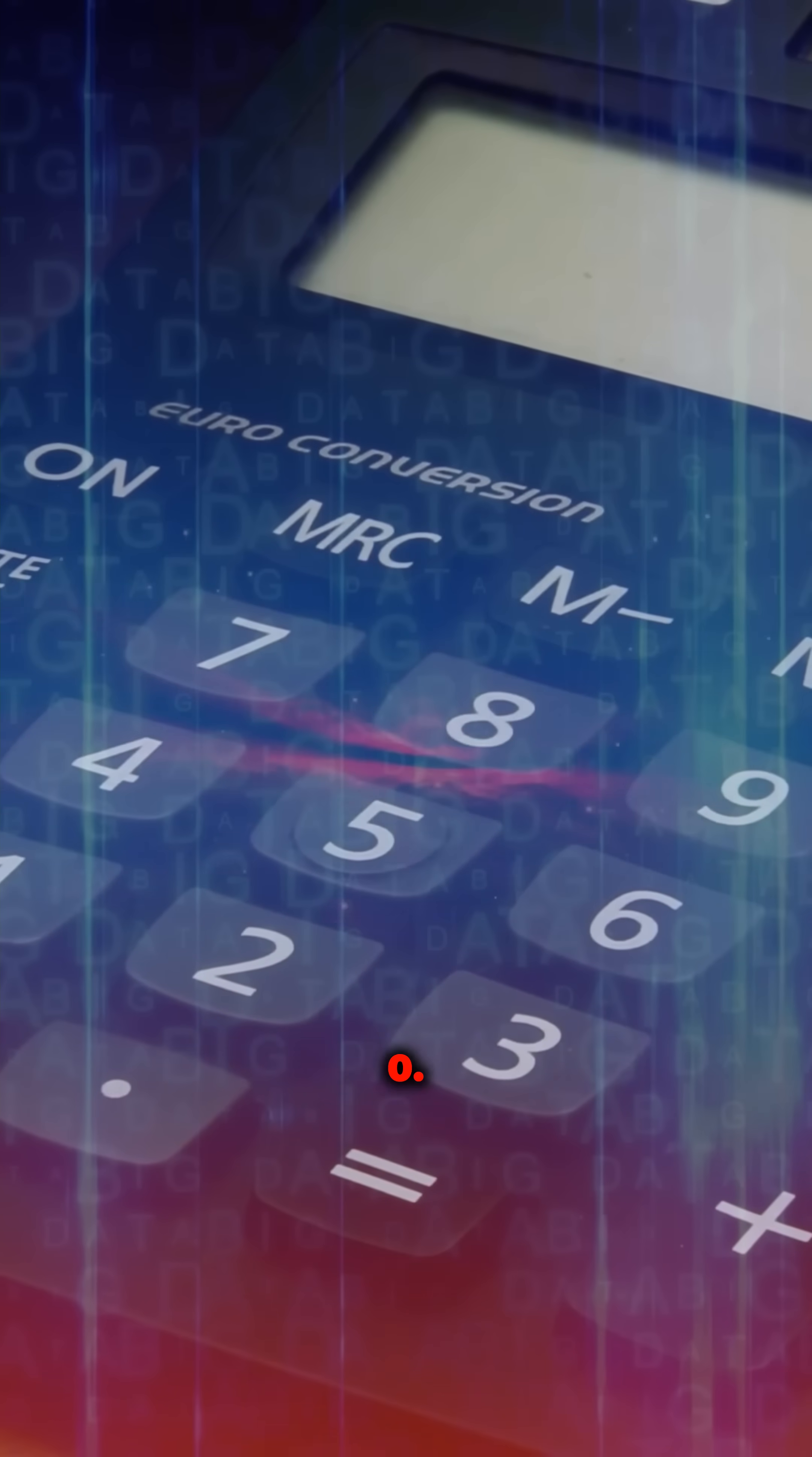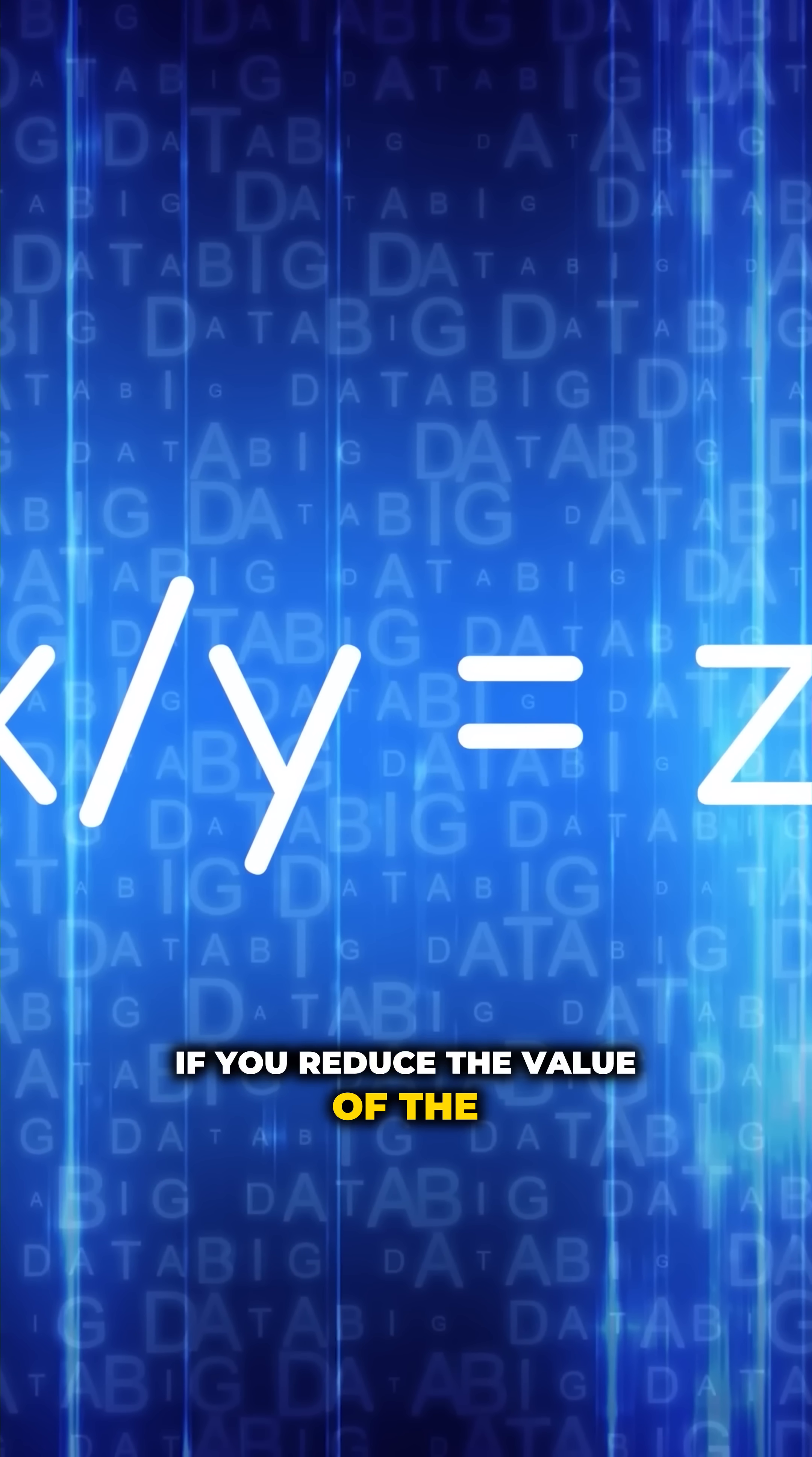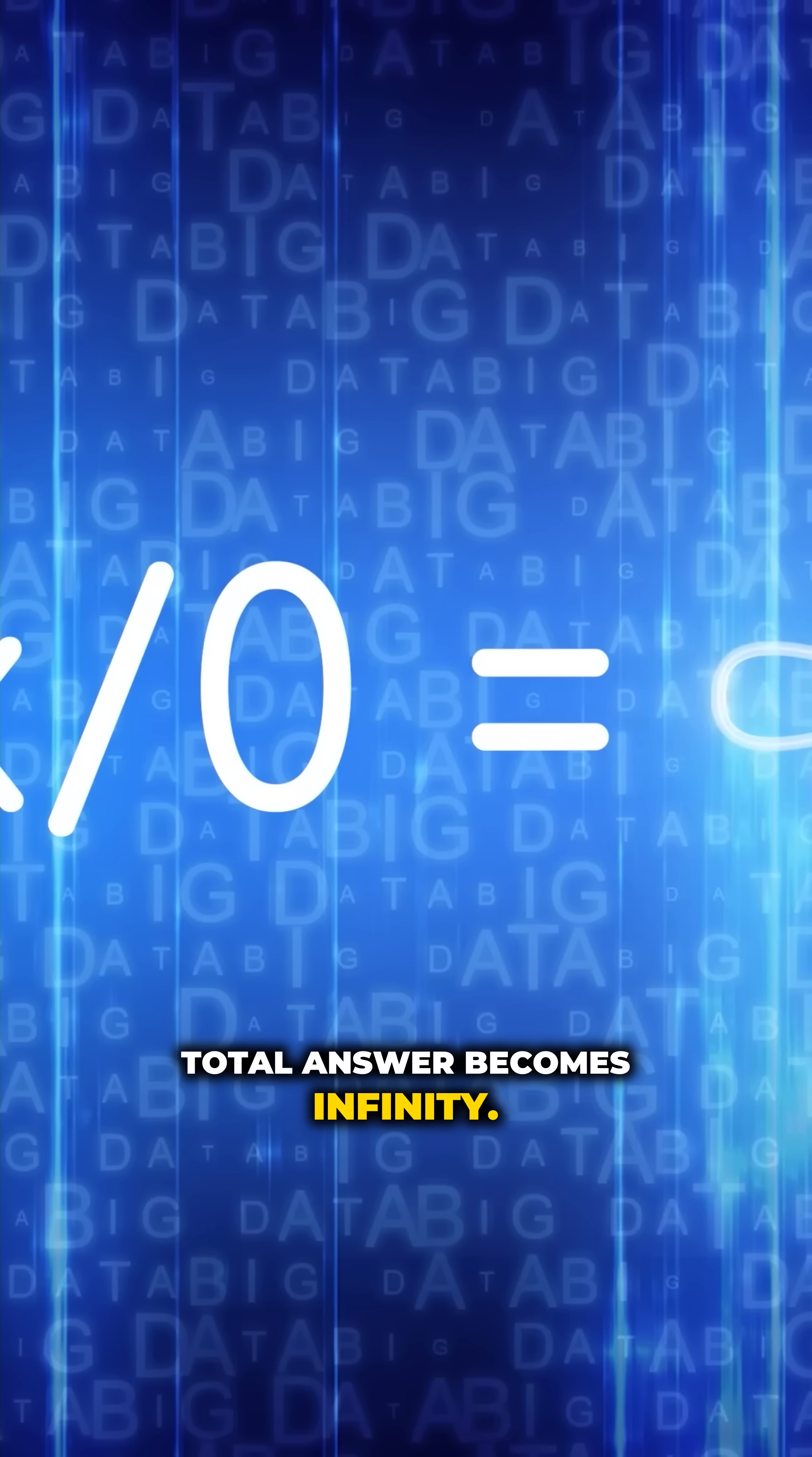Calculators do not like dividing by zero. This is because the smaller the denominator becomes on a fraction, the larger the total number becomes. If you reduce the value of the denominator all the way down to zero, the only way this can work is if your total answer becomes infinity.